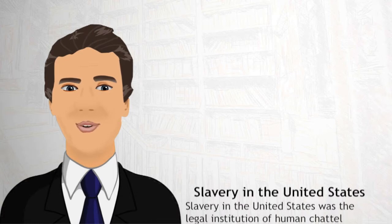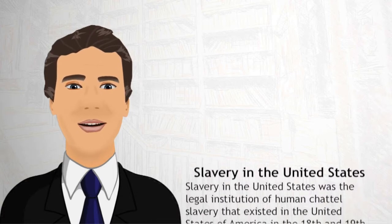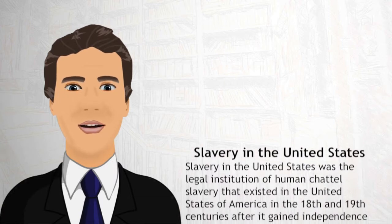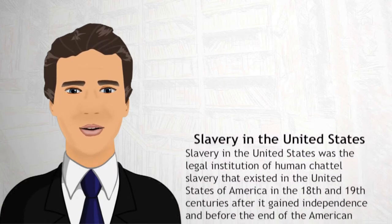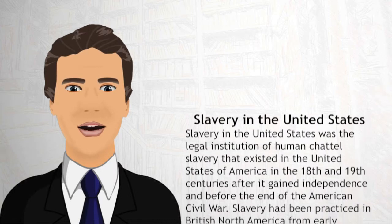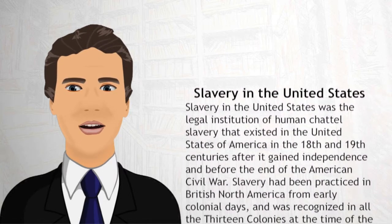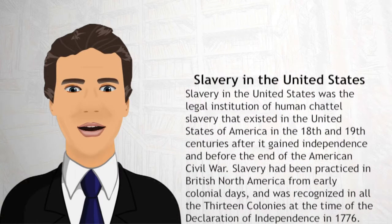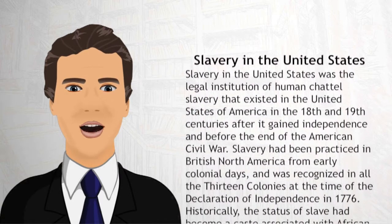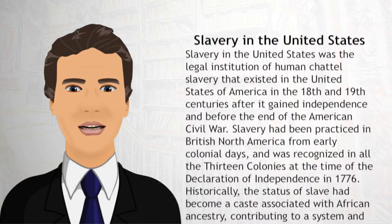Slavery in the United States was the legal institution of human chattel slavery that existed in the United States of America in the 18th and 19th centuries, after it gained independence and before the end of the American Civil War. Slavery had been practiced in British North America from early colonial days, and was recognized in all 13 colonies at the time of the Declaration of Independence in 1776.